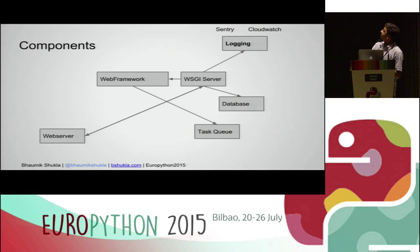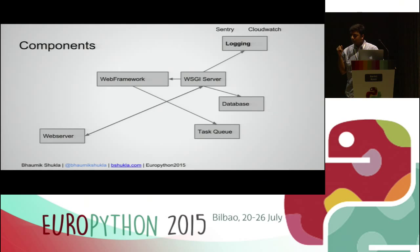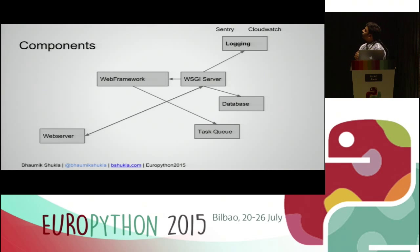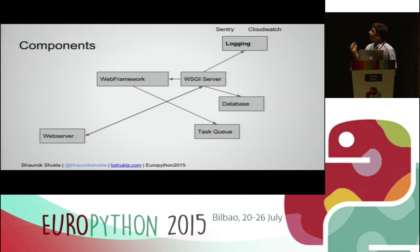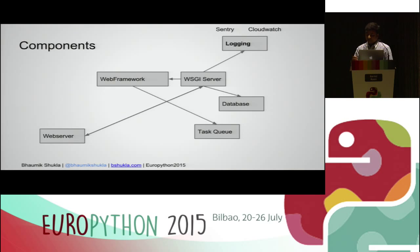Next is logging. Logging can be event-based, or you can log everything or something specific. Sentry is a good option because it has good logging power, provides a dashboard where you can search your data, monitor event-based data, and provides notifications — so if any error occurs, you get an email. CloudWatch is another option.